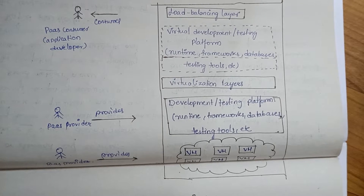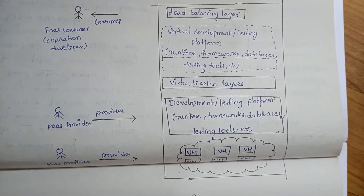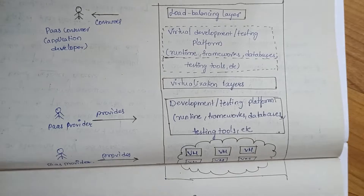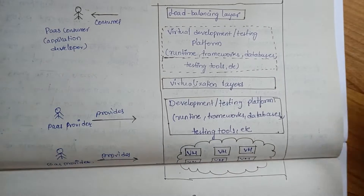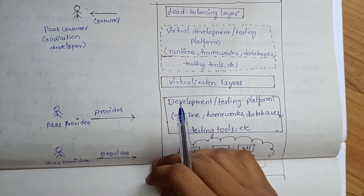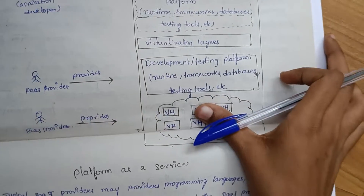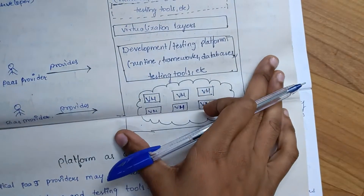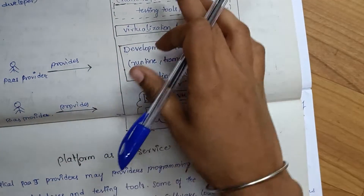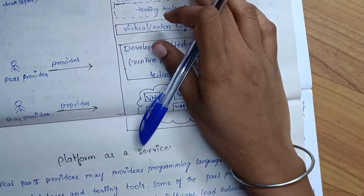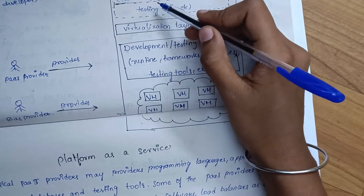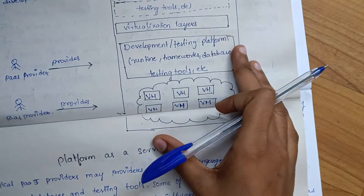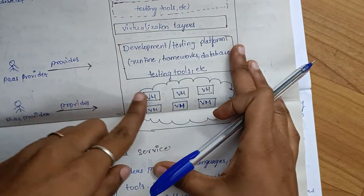We are going to provide a service. We are going to choose one by one, so we are going to have a platform as a service. We are going to choose a virtual machine.